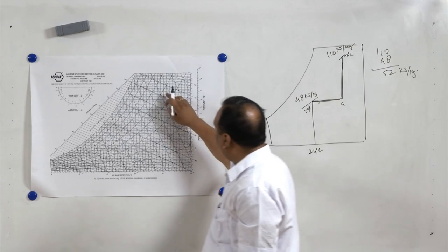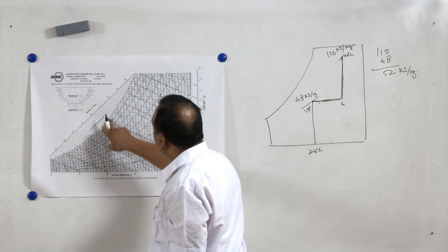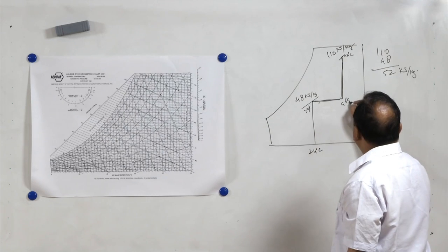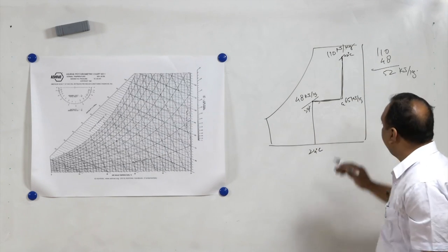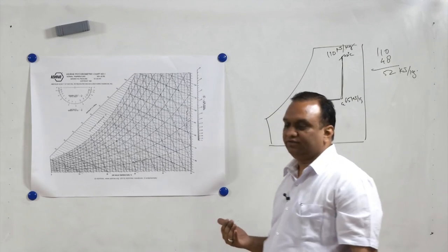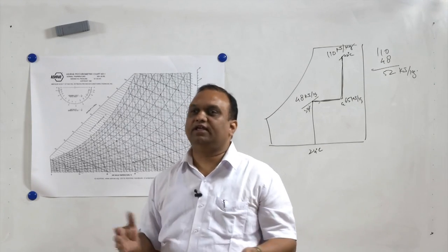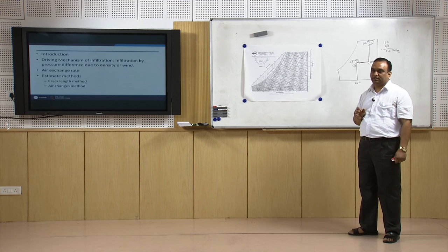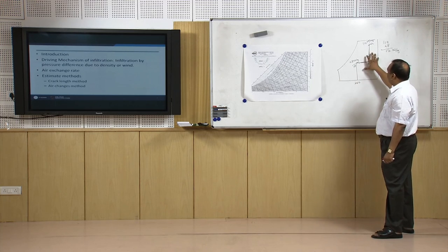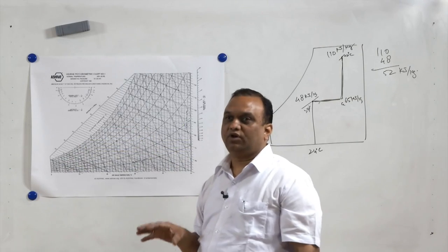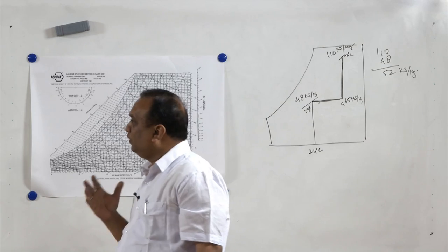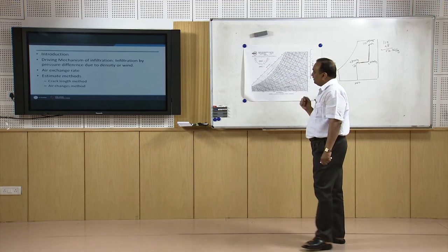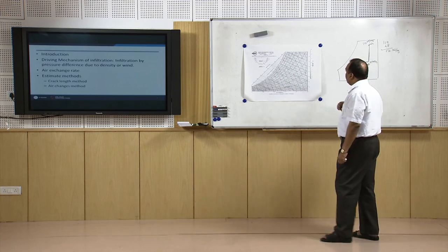The sensible heat addition can be found from the psychrometric chart to be approximately 65 kJ/kg. This information is helpful when doing load calculations, because when designing an air conditioner for a building, infiltration load must be taken into account and added to the total building cooling load. The problem then is: how do we estimate the infiltration in a building?